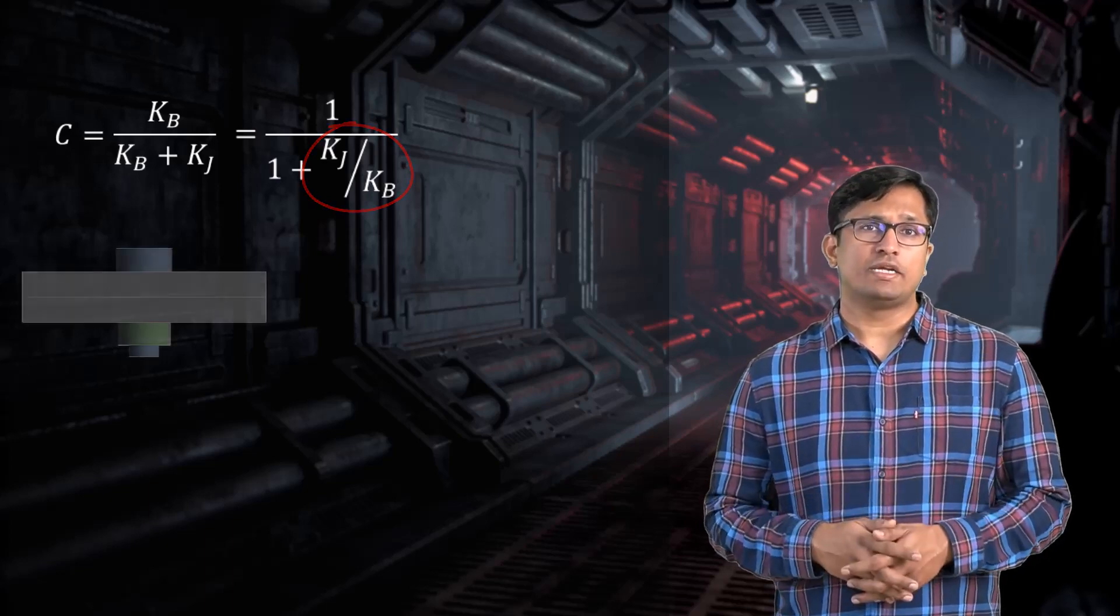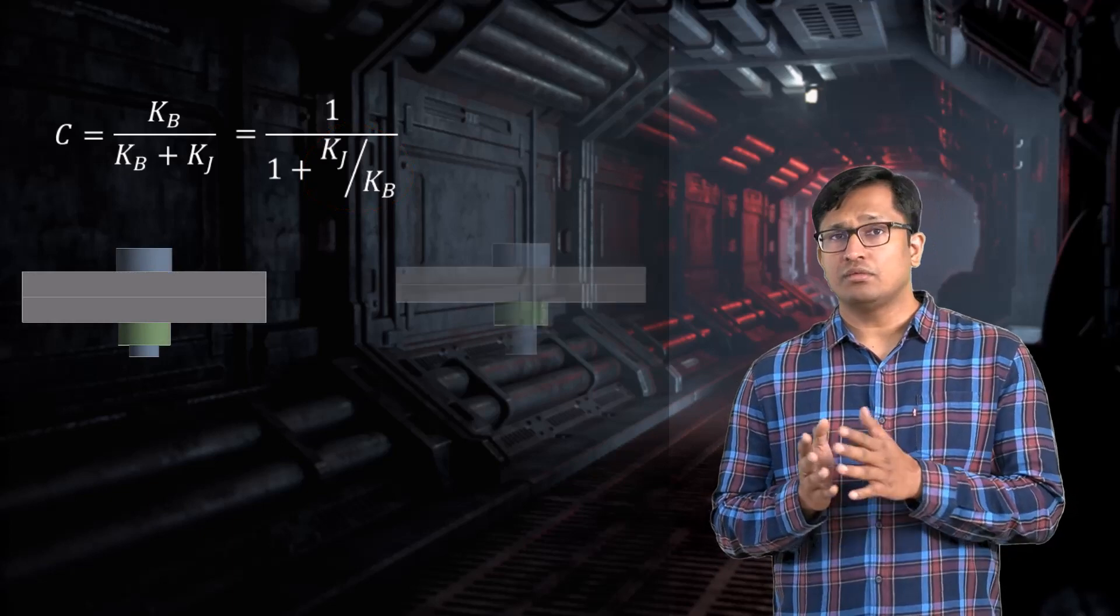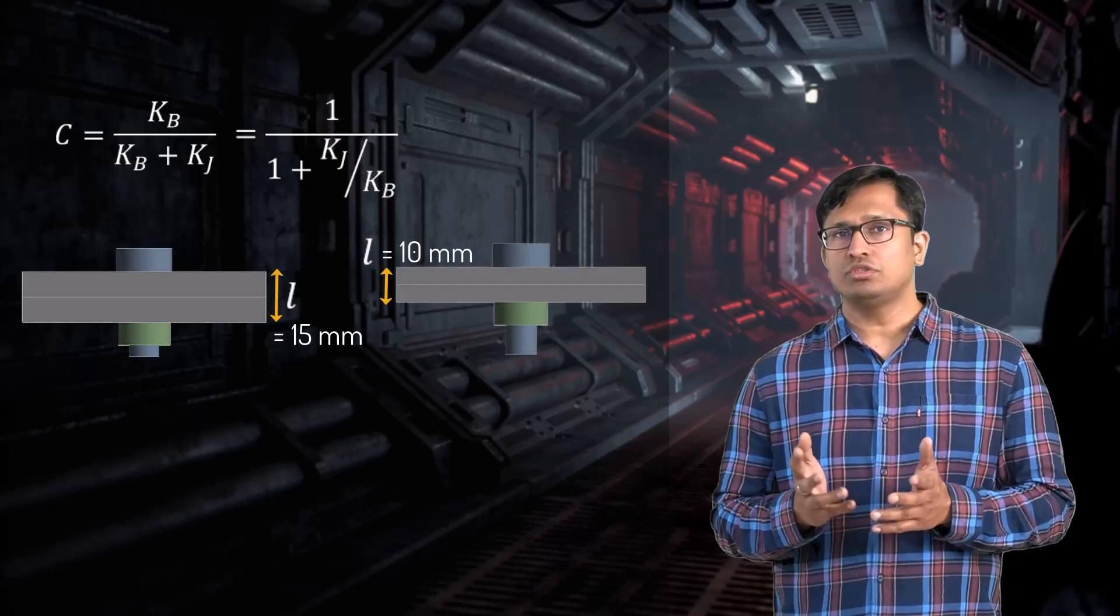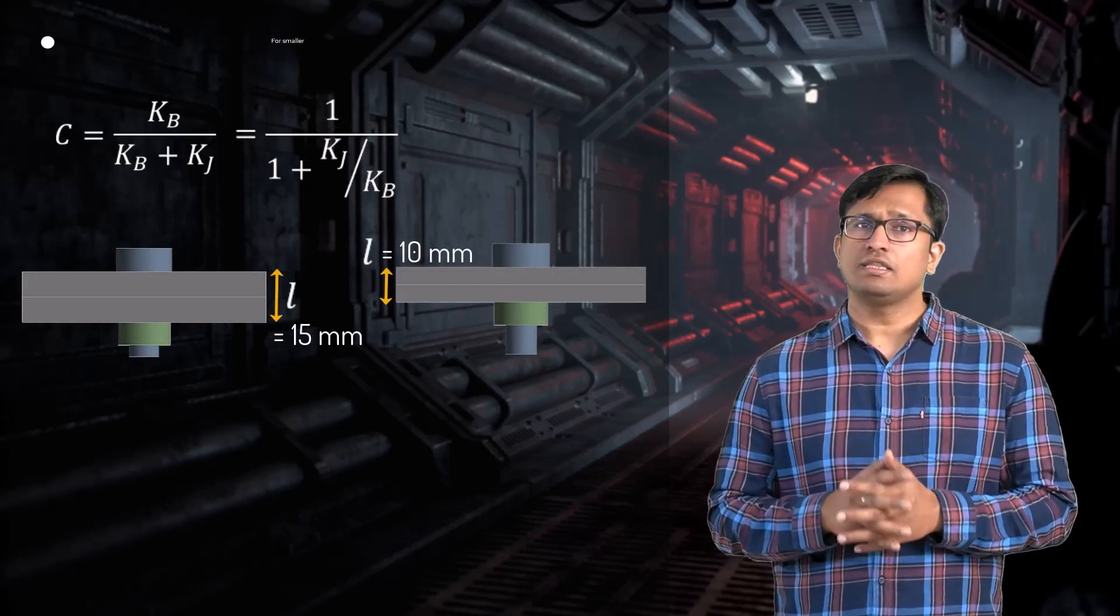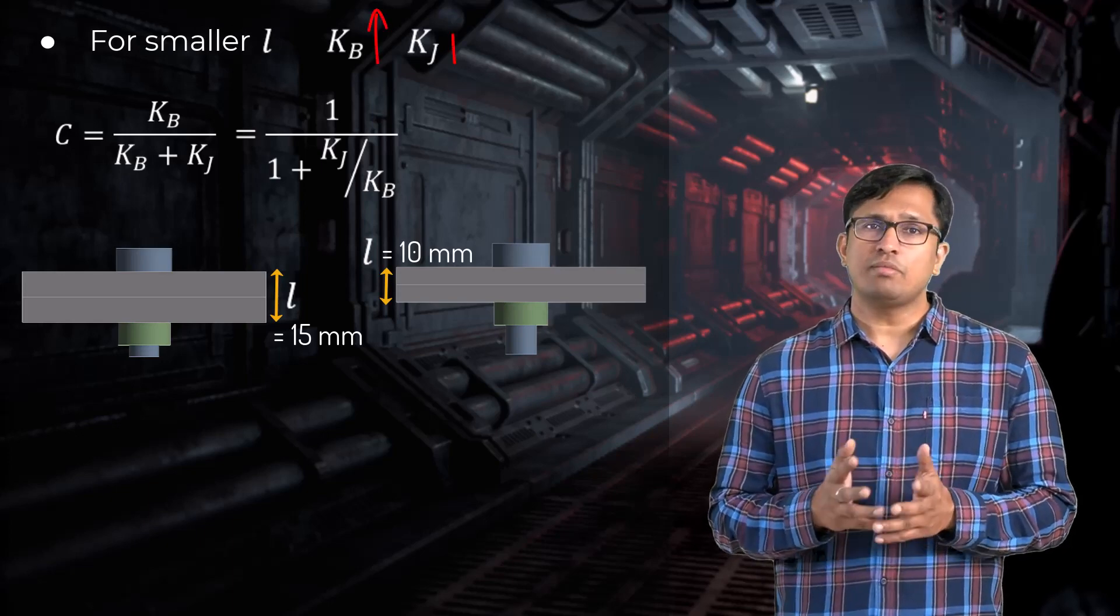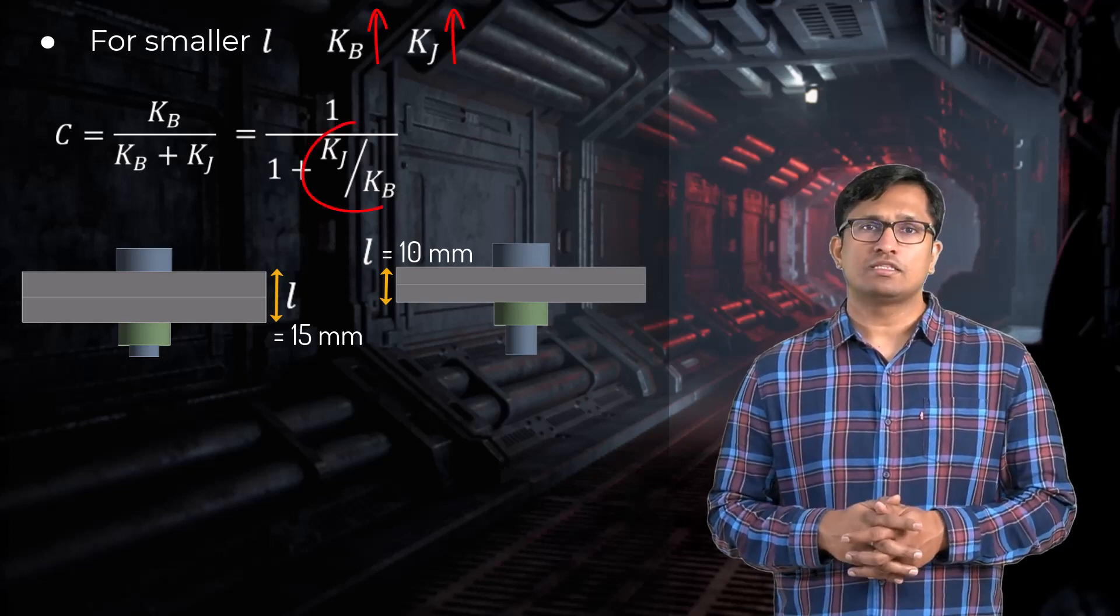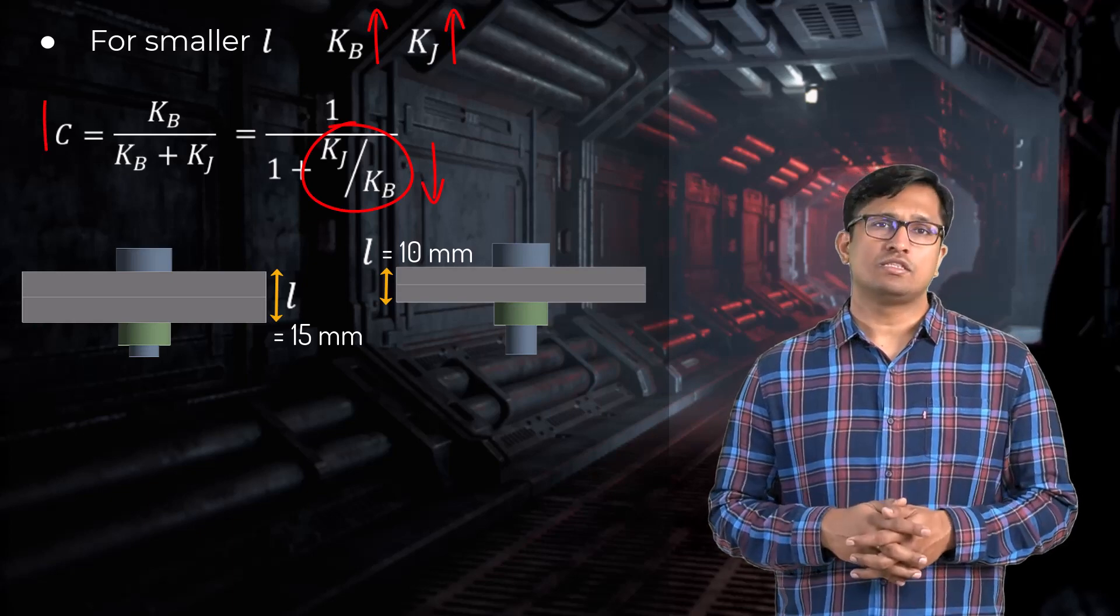When we replace the two plates in our simulation with thinner plates, the grip length of the bolt changes. This results in an increase of both bolt stiffness and member stiffness as well as an overall increase in the C value.